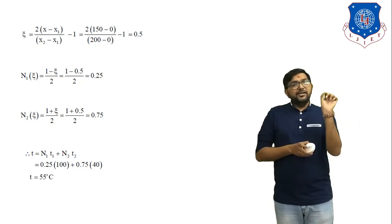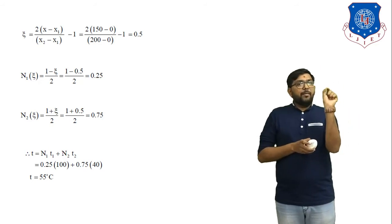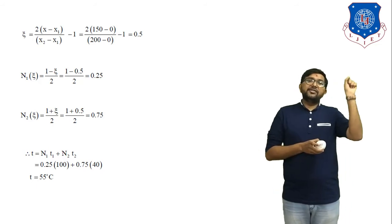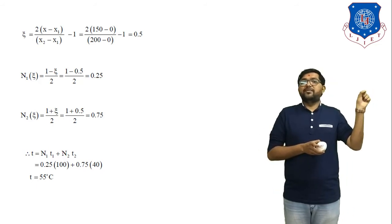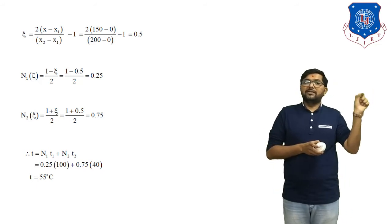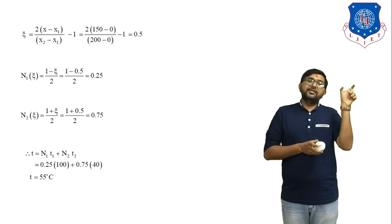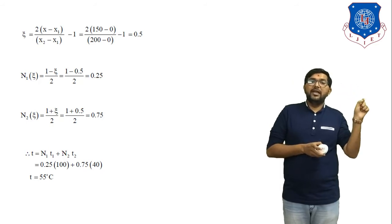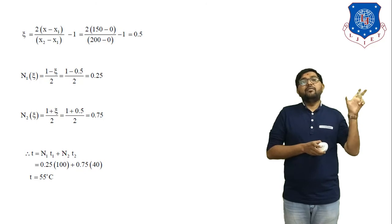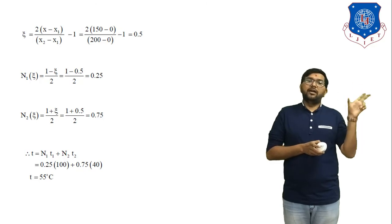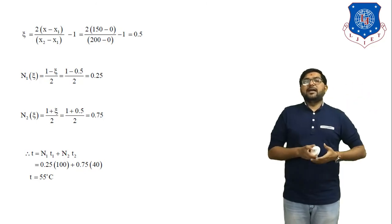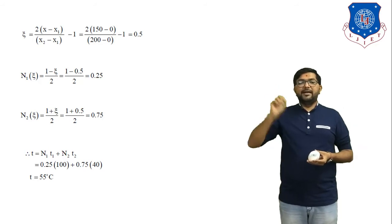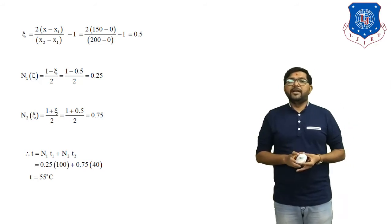At distance 0 mm temperature is 100 degree Celsius, at distance 200 mm temperature is 40 degree Celsius, and at distance 150 mm temperature is 55 degree Celsius — meaning the temperature is in between 40 and 100. So the answer for temperature at point P is 55 degree Celsius.